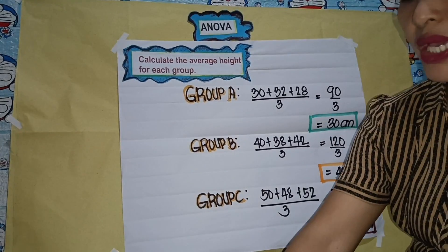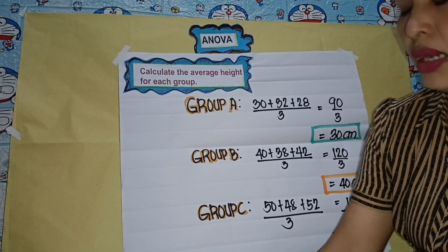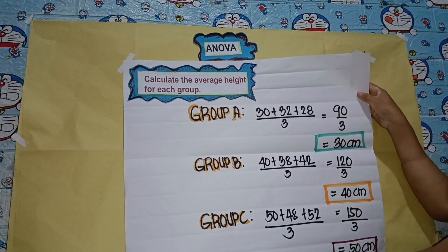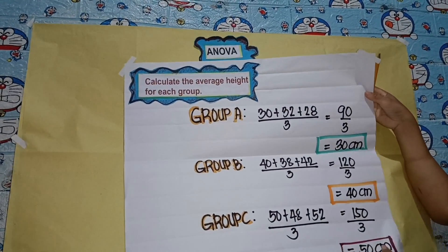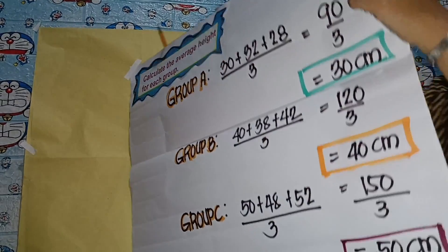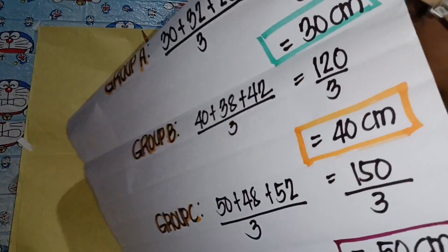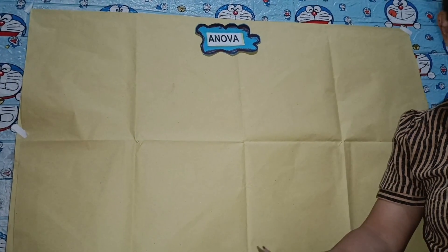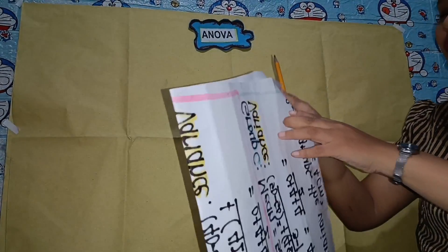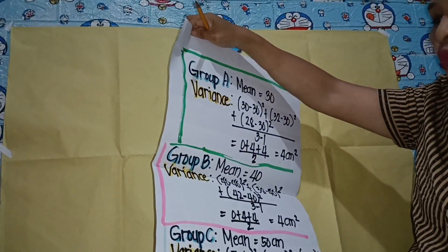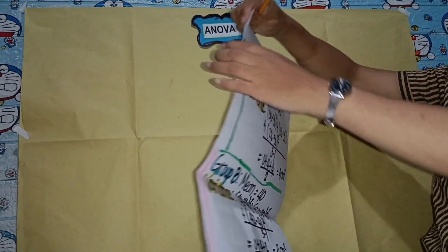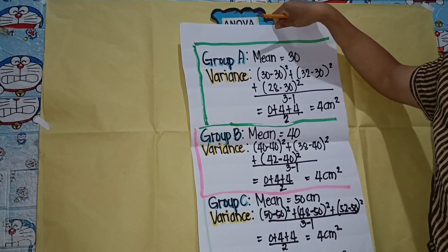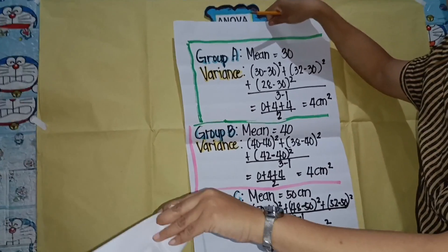Now let's calculate the variance. We already computed the range. Now we need the variance, which is very important. The within-group variation range is equal across all groups. We will now calculate the variance — it measures how far each value is from the group average.